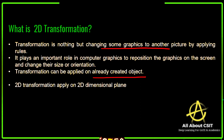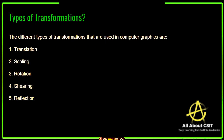First try to create the object and then apply the transformation on that object, or else you can directly apply the transformations on an already created object. These 2D transformations are playing a very important role in computer graphics and are responsible for repositioning the graphics on the screen and changing their size as well as orientation. The 2D transformations apply on 2D dimensional planes.